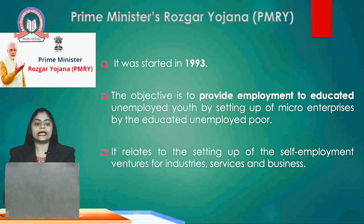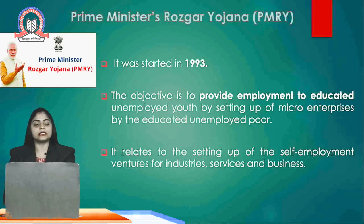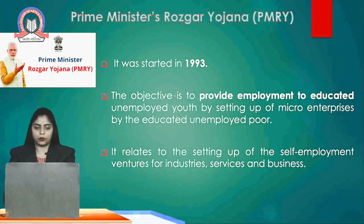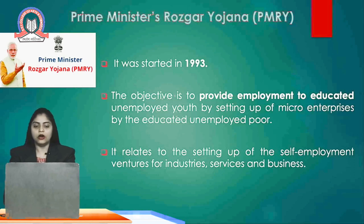Next is Prime Minister Rozgar Yojana, started in 1993. The main purpose is to provide employment to educated unemployed youth by setting up micro enterprises. The main aim is self-employment ventures for industries, services, and businesses.